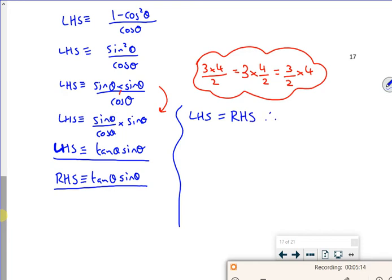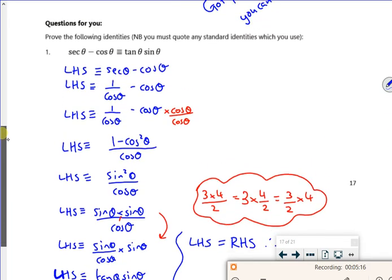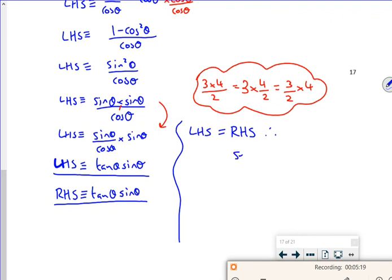Therefore, my equation works, which was secant theta minus cos theta is exactly the same as tan theta times sin theta. So that's figured out.